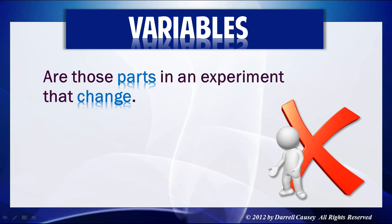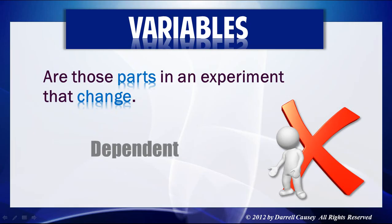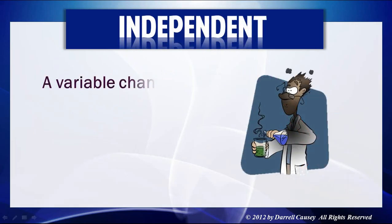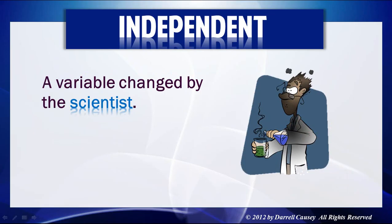There are two types of variables: the independent variable and the dependent variable. The independent variable is the variable changed and controlled by the scientist, and usually you want that to be one variable. If you have more than one independent variable, you need to design another experiment.